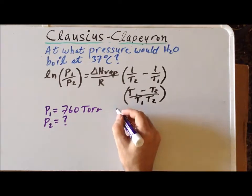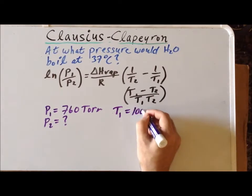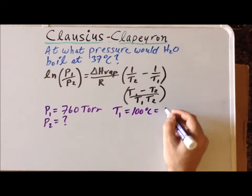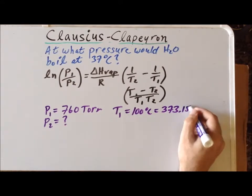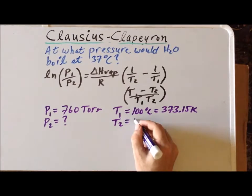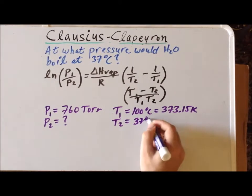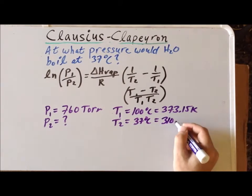T1 is the normal boiling point of water, 100 degrees centigrade, which is 373.15 Kelvin. T2 is 37 degrees centigrade, which is 310.15 Kelvin.